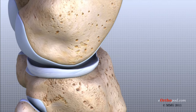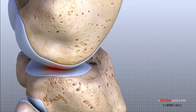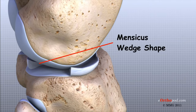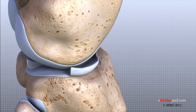Without the menisci, the concentration of force into a small area on the articular cartilage can damage the surface, leading to degeneration over time. The menisci also help the ligaments with stability of the knee by acting like a wedge set against the bottom of a car tire. The menisci are thicker around the outside, and this thickness helps keep the round femur from rolling on the flat tibia. The menisci convert the tibial surface into a shallow socket, enhancing stability and protecting articular cartilage from excessive concentration of force.